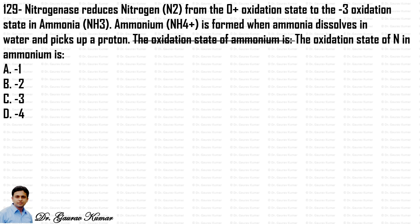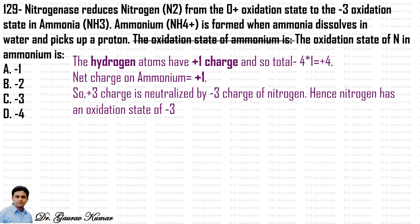Next question: what is the oxidation state of nitrogen in ammonium? The ammonium ion has a +1 charge, and each hydrogen has a +1 charge, so four hydrogens contribute +4. Since ammonium shows a +1 overall charge, the nitrogen must be −3 to balance (+4 + (−3) = +1). Hence nitrogen has an oxidation state of −3, and the answer is C.